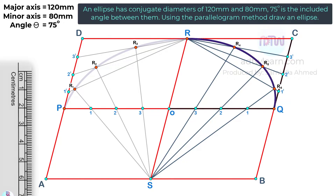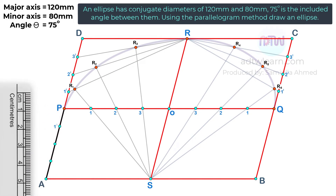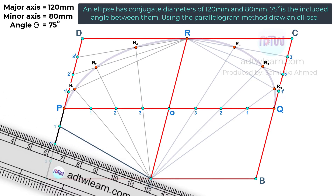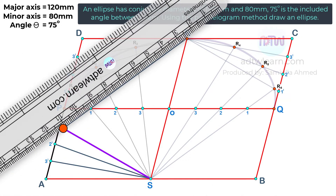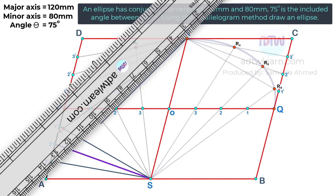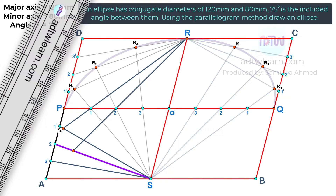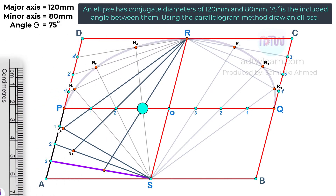Similarly, follow the same steps on the remaining two areas. Divide this line PA into four parts and name these points as 1 dash, 2 dash, and 3 dash. Next, join these points to point S. Draw a line from point R to line 1 dash S, passing through point 1 — mark this intersection point as S2. At last, draw a line from point R to line 3 dash S, passing through point 3 — mark this intersection point as S3. If we join these points — P, S1, S2, S3, and S — we get the third one-fourth of an ellipse.